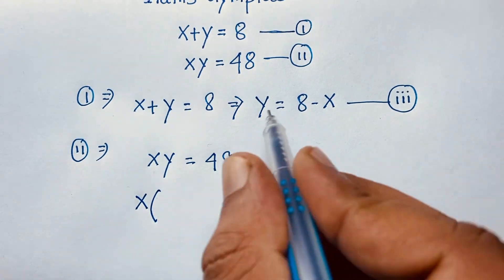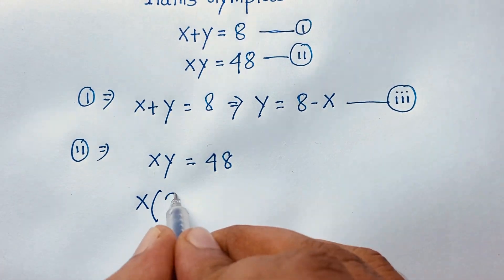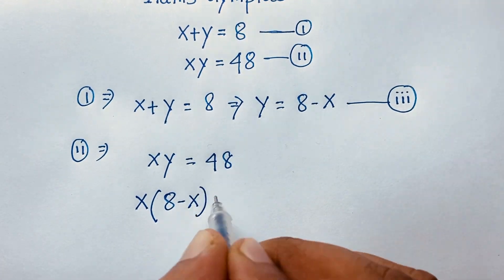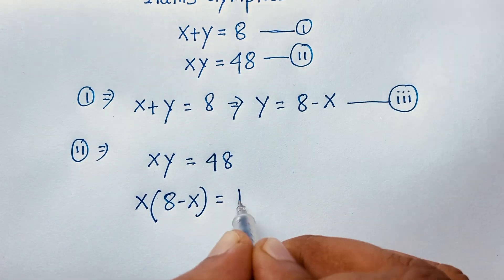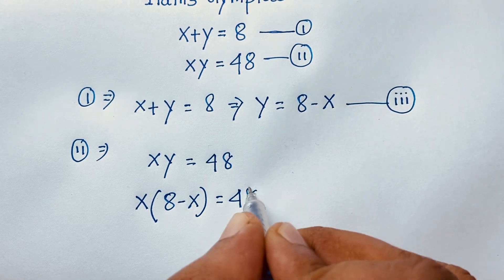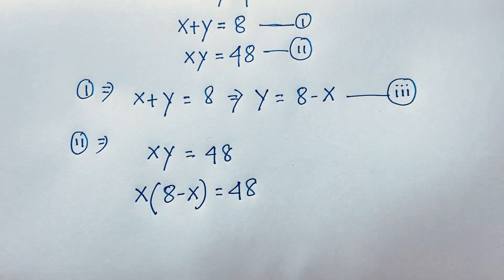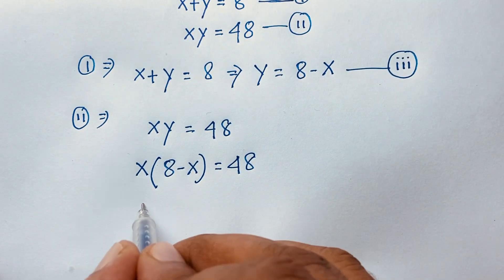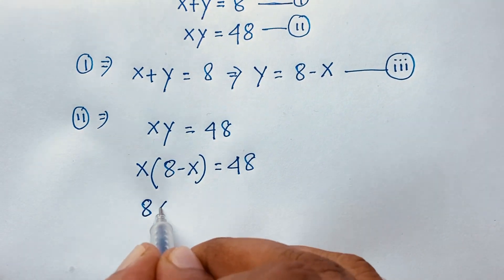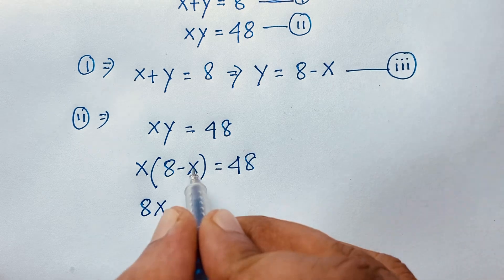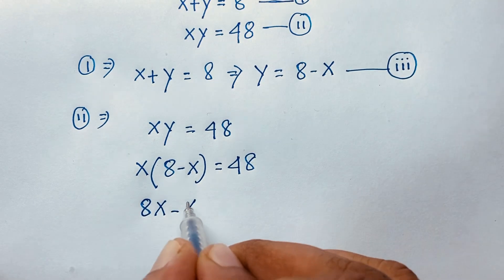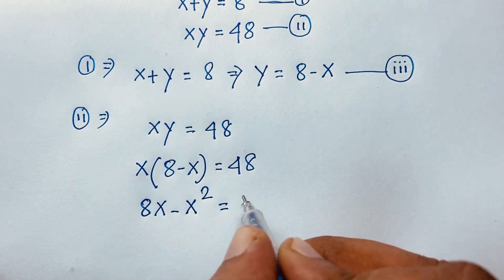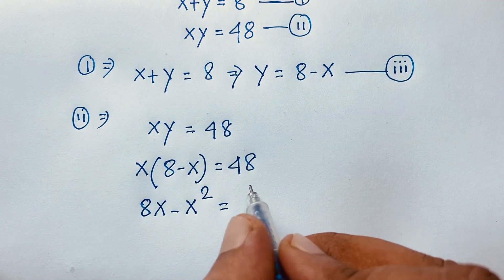Substituting y = 8 minus x into x times y = 48, we get x times (8 minus x) is equal to 48. Expanding, this gives 8x minus x squared is equal to 48.